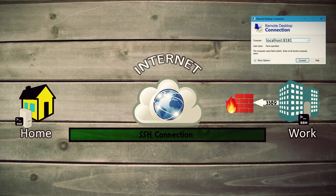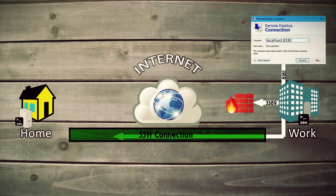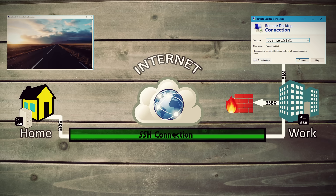What the computer is doing is taking the data sent to the port we created and forwarding it through our SSH tunnel, bypassing the firewall. Then when it gets to our computer at home, it uses port 3389 to connect to our remote desktop application, finishing the connection from there. Pretty doggone spectacular, right?